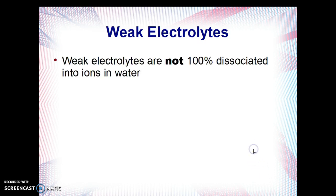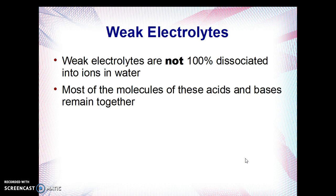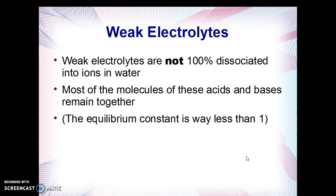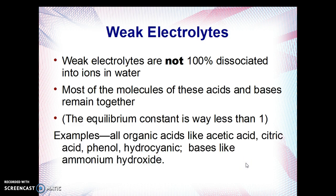Now for weak electrolytes. Weak electrolytes are not 100% dissociated into ions when put into water. Most of the molecules of the acids and bases remain together — they don't break up. In AP you'll learn that the equilibrium constant here is way less than one. For example, organic acids like acetic, citric, butanoic, and phenol are weak. Bases like ammonium hydroxide and hydrazine are weak. And most acids and bases are in fact weak.